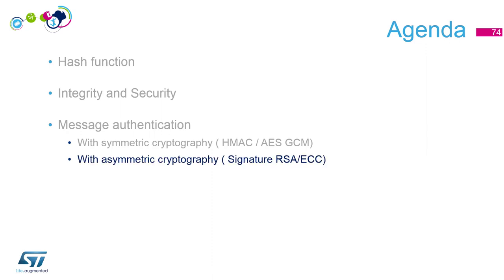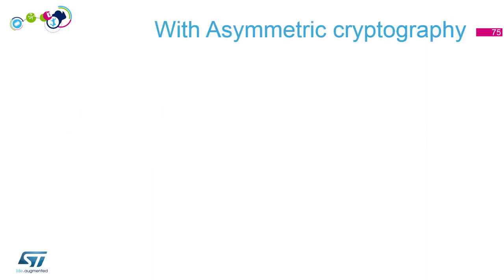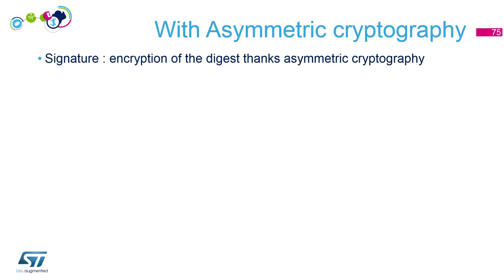Now let's do it with asymmetric cryptography — signatures with RSA and ECC. With asymmetric cryptography we're talking about signatures: encryption of a digest using asymmetric cryptography. For ECC, it's a specific algorithm rather than direct encryption, but let's keep the term 'encryption' as with RSA because it simplifies understanding.